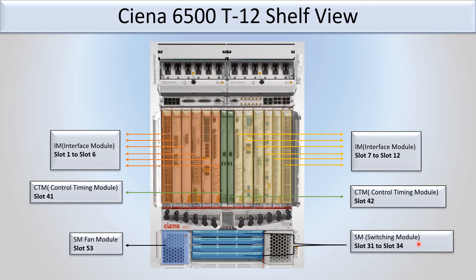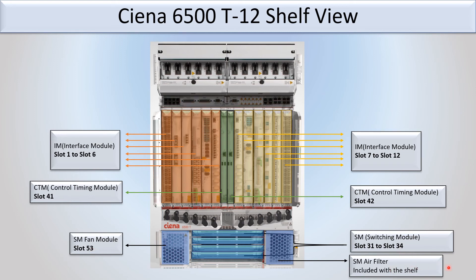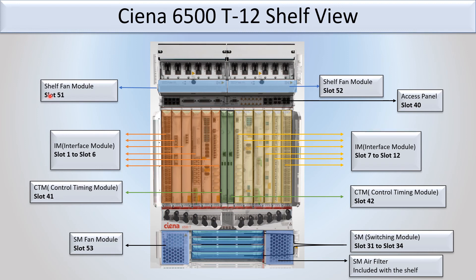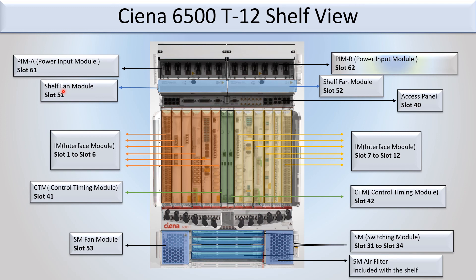Slot 53 is for the fan module, with an SMU filter included. Slot 40 is the access panel. Slots 51 and 52 are also for the fan module. Slot 61 and slot 62 are the two slots for the power module — slot 61 for PIM A (Power Input Module A) and slot 62 for PIM B (Power Input Module B). There is also a self air filter.